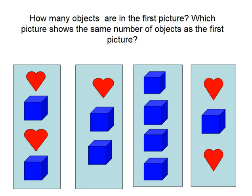How many objects are in the first picture? The first picture shows four objects, so the answer is four objects. This is the right answer.